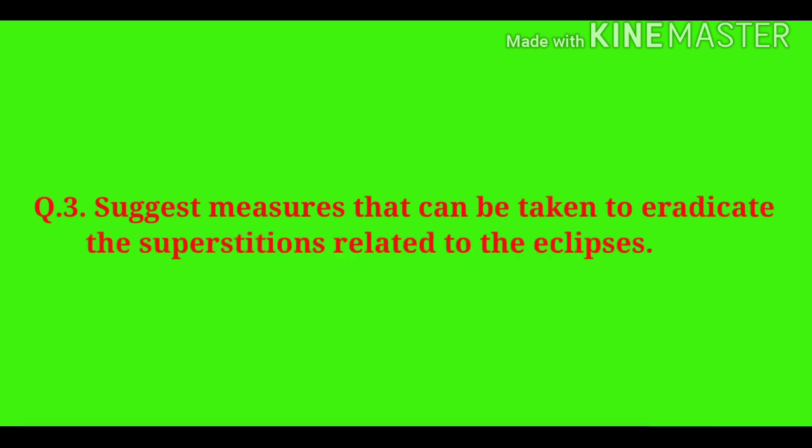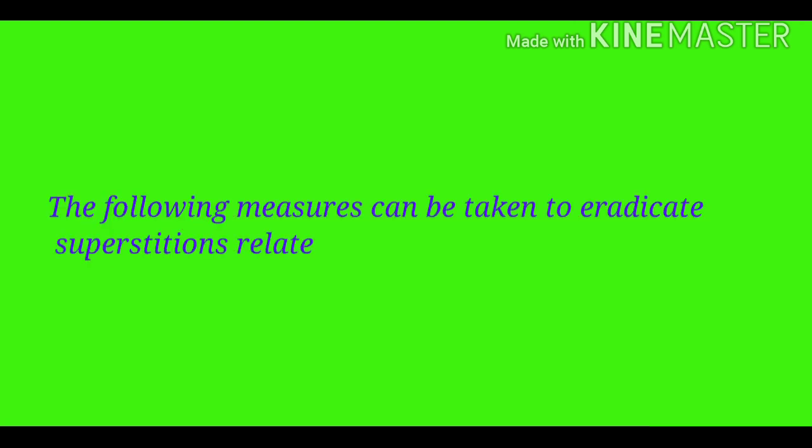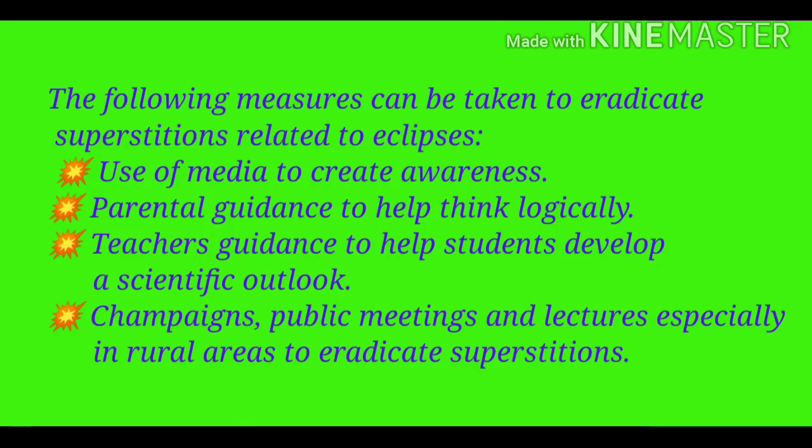Question number three: Suggest measures that can be taken to eradicate the superstitions related to eclipses. Use of media to create awareness. Parental guidance to help think logically. Teacher's guidance to help students develop a scientific outlook. Campaigns, public meetings and lectures, specially in rural areas, to eradicate superstitions.